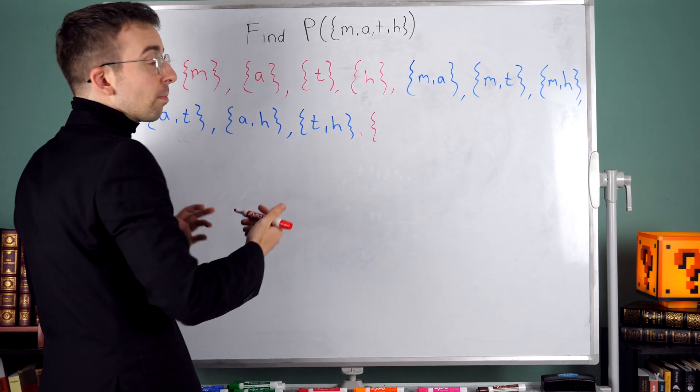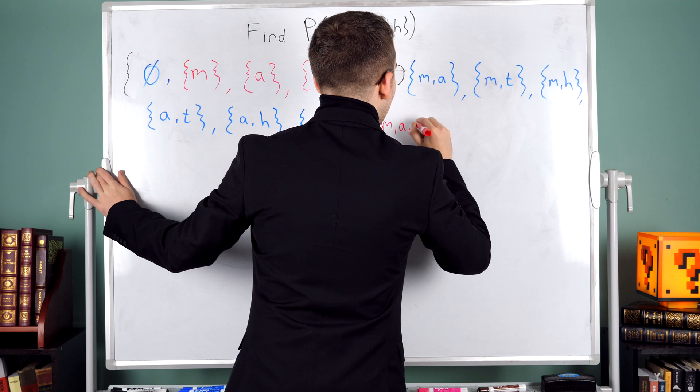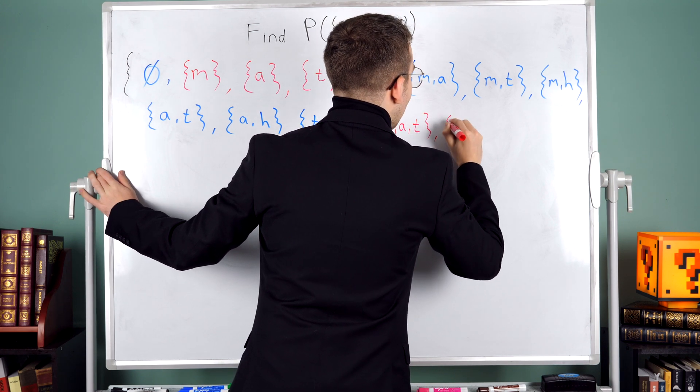I'm just going to look at the first three letters m, a, and t and write that subset. The subset containing m, a, and t.